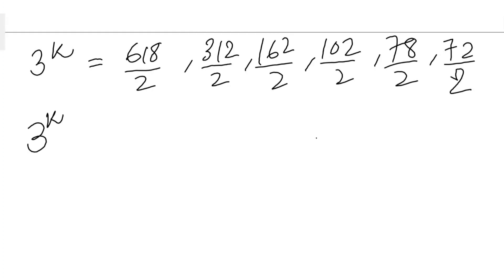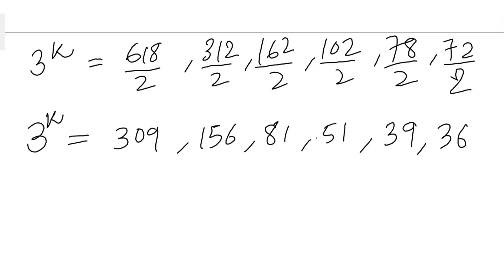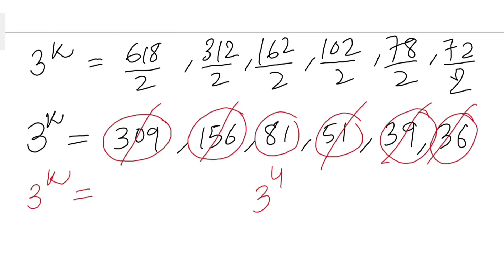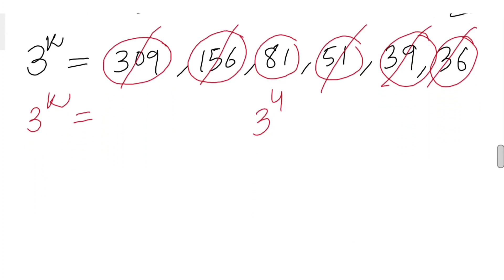So 3^k must equal 309, 156, or 36. Since k is a natural number, 3^k must be a power of 3. Checking: 309 is not a power of 3, 156 is not a power of 3, but 36 is not either — wait, let me re-examine. Actually 81 = 3 to the power 4 is a valid power of 3. So the only valid case gives 3^k = 81, meaning k = 4.